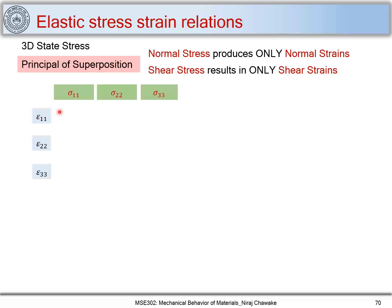By the principle of superposition, these three normal stresses develop three normal strains: epsilon 1 1, epsilon 2 2, and epsilon 3 3. We know epsilon 1 1 equals sigma 1 1 upon E. Similarly, epsilon 2 2 equals sigma 2 2 upon E, and epsilon 3 3 equals sigma 3 3 upon E. Now when I apply sigma 1 1 in a uniaxial tensile test, strains are also developed along y and z directions.